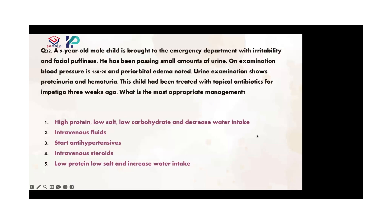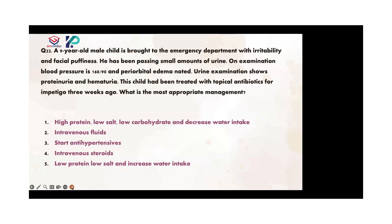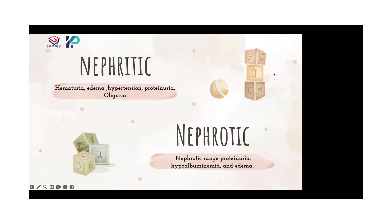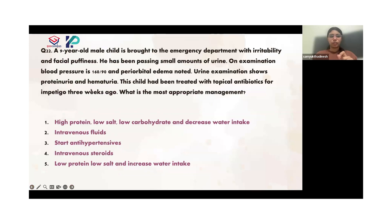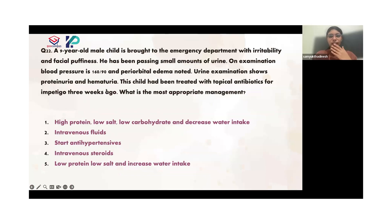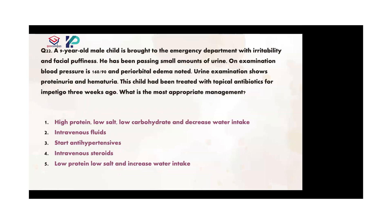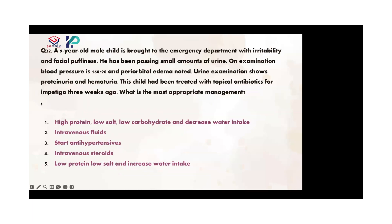In nephrotic, there will be generalized edema and proteinuria, but minimal hematuria — like in this case, there is hematuria. You're right. In nephrotic, they won't have hematuria; they'll have nephrotic-range proteinuria, hypoalbuminemia, and edema. But in nephritis, which is an inflammation, they'll have hematuria, edema, hypertension, proteinuria, and oliguria. So this kid has hematuria and high blood pressure — not in the nephrotic range. And in addition, there is one another clinical feature which points to nephritis: there is an impetigo infection a few weeks back — beta-hemolytic streptococcal infection.